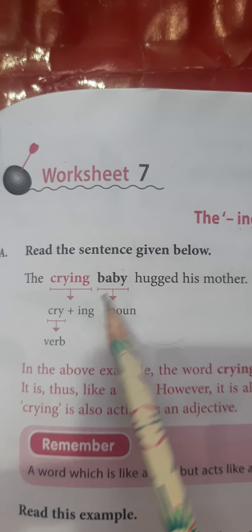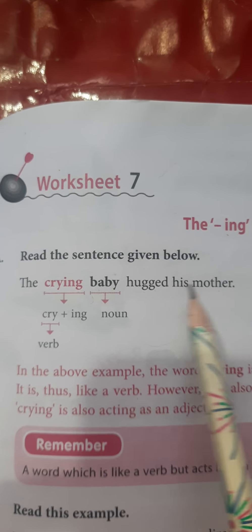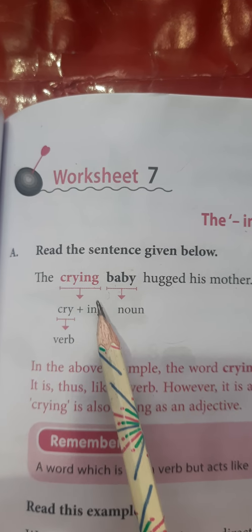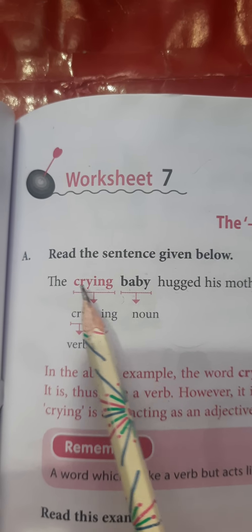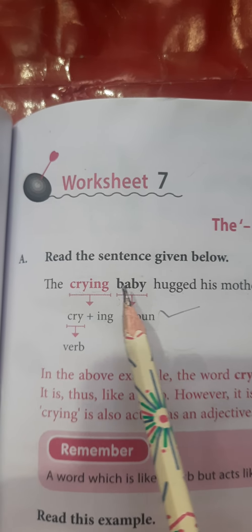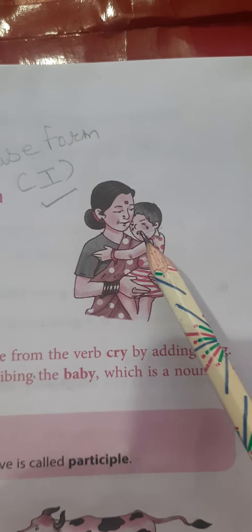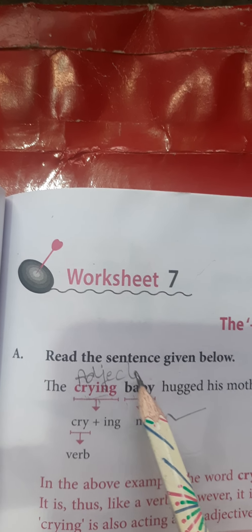Read the sentence given below: 'The crying baby hugged his mother.' In this sentence, we see that 'cry' is the first form of the verb and 'ing' is applied after it — so 'crying.' Now 'baby' is a common noun here. What type of child? The child was crying. Here you can see in the picture the child was crying. So according to the rule of grammar, the word that qualifies a noun is an adjective. So 'crying' is working here as an adjective, giving additional information about the baby.